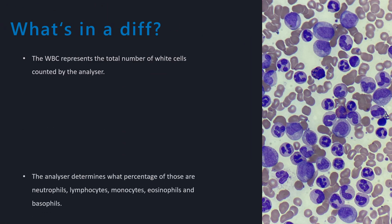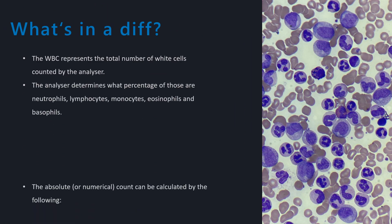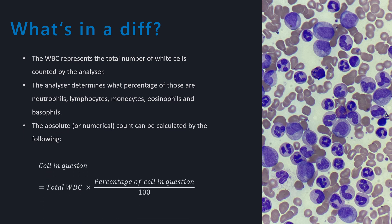After the analyzer has done the white cell count, it quantifies how many of each there are based on the percentage. For example, if the total white cell count was 15.0 and 80% were neutrophils, the absolute neutrophil count would be 12.0. The other 20% would consist of the lymphocytes, monocytes, eosinophils and basophils.